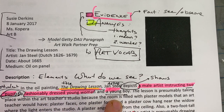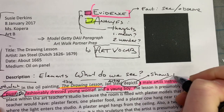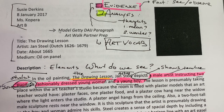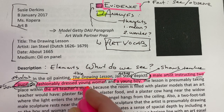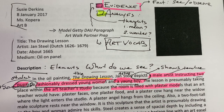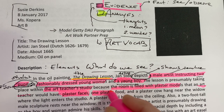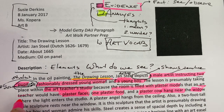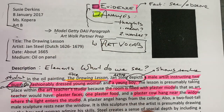One woman is well-dressed — you could argue that's an opinion. There is a male artist who is a teacher. All of this is a fact. The lesson is presumably taking place within the art teacher's studio. The room is filled with plaster models that the art teacher would have. This is all evidence because it's in the painting. Plaster faces, one plaster foot, plaster cow hang near the window where the light enters the studio. A lot of details — all facts. No art vocab yet.